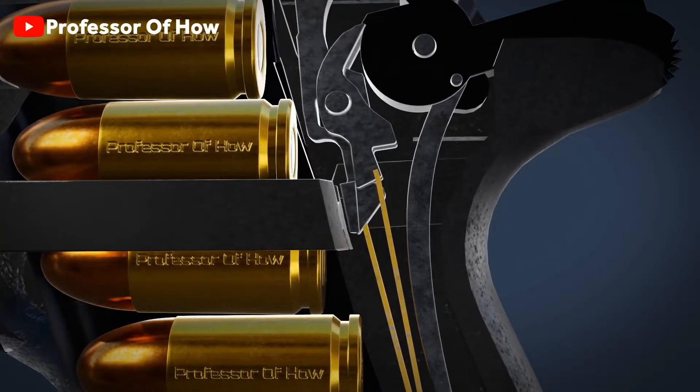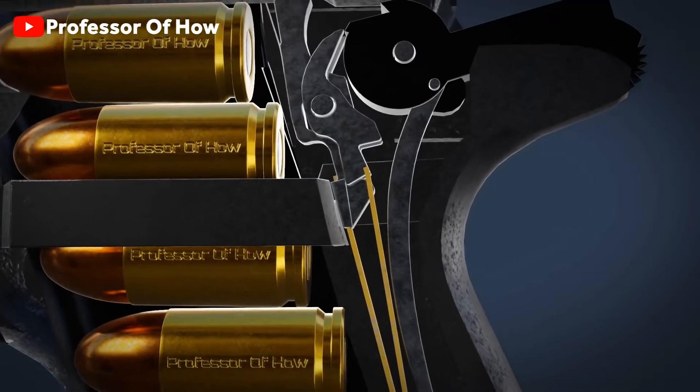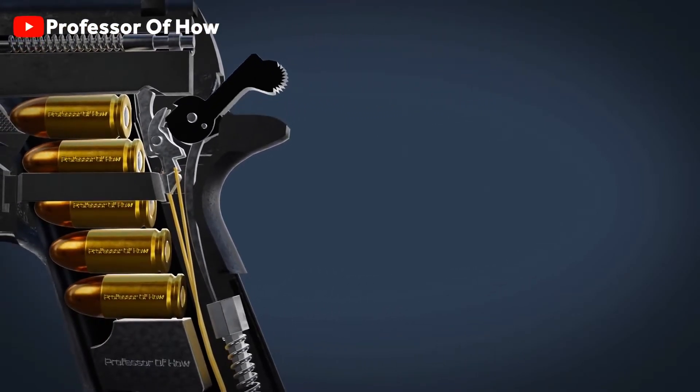Now, as soon as the trigger is pressed, it will press this disconnector. This connector will further push this sear, setting the hammer free, further striking this firing pin under the main spring's tension.